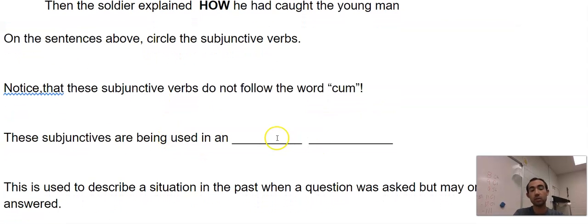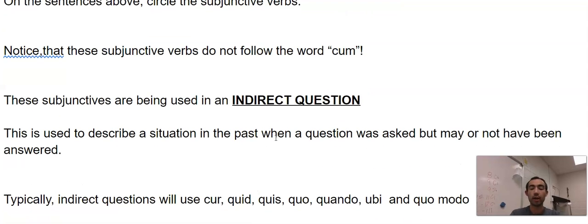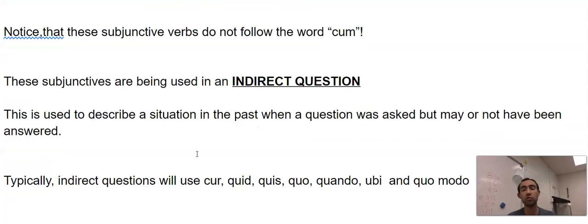That's because these subjunctives are used in something called an indirect question. Indirect questions are a type of clause, and it's a subordinate clause like cum clauses. They're not main clauses, they're dependent subordinate clauses. They are used to describe a situation in the past or potentially in the present when a question was asked but may or may not have been answered.